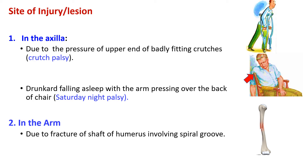The second reason is that after heavy drinking, a drunkard may fall asleep with the arm pressing over the back of a chair, and the axilla comes in contact with the upper end of the chair. This is known as Saturday night palsy, because earlier, people usually used to drink on weekends, that is on Saturdays.